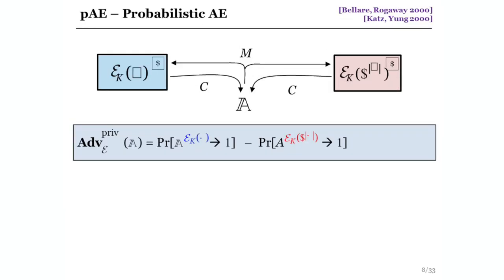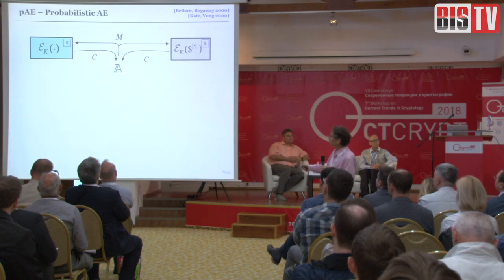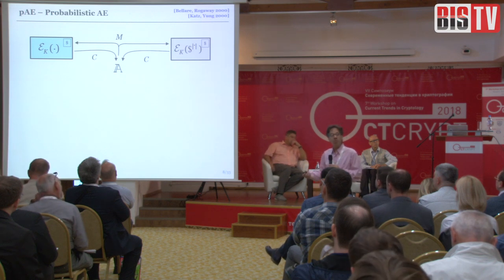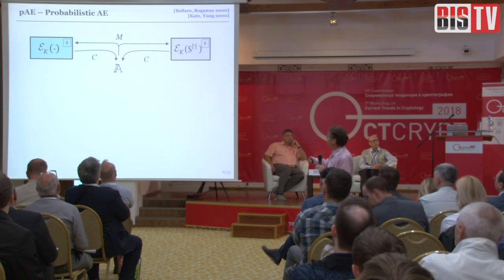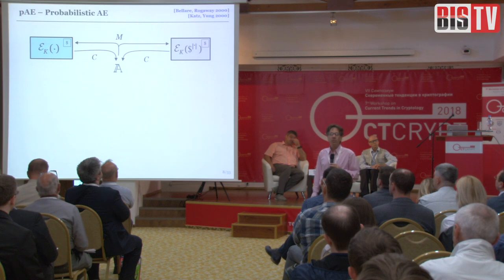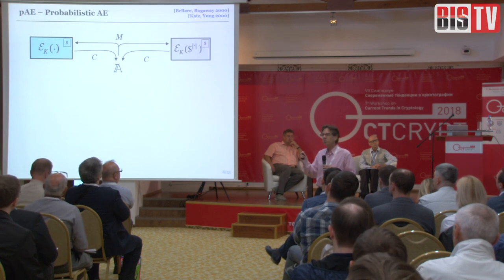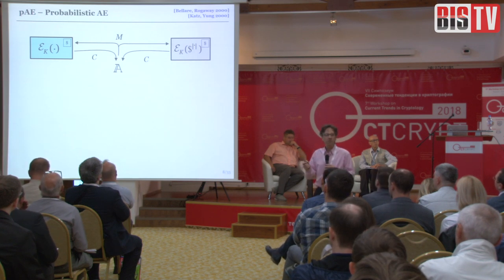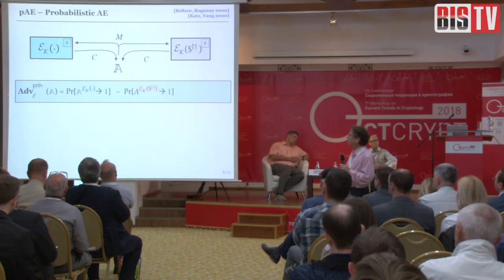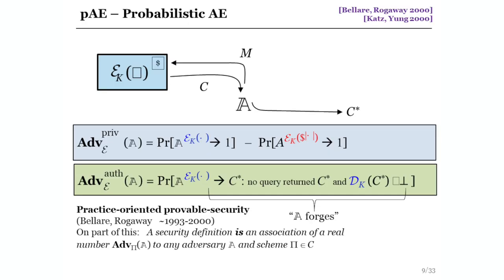In a cryptographic definition in the provable security tradition, the adversary A is confronted with the task of distinguishing one of two oracles — either placed in a left world or a right-hand world. In the left world, we choose a key K at random and encrypt whatever the adversary asks for using that key, with fresh coins chosen for each query. Alternatively, we provide a bogus oracle on the right that attends to the length of the question, replaces it with an equal number of random bits, and encrypts those. The adversary's job is to guess which world it's in, and we define the advantage as simply the difference in probabilities.